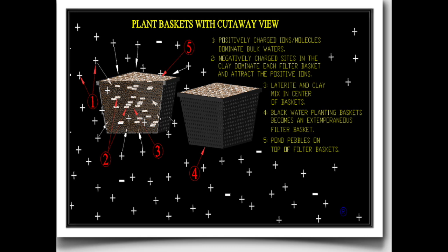Hello everybody, this is Dr. Novak again. This is the second part of me explaining the nitrogen cycle. If you watched part one, you probably learned right away that there are three types of oxygen requirements for bacteria. We're not talking about anaerobic bacteria because they don't require any oxygen — we're talking about the oxygen requirements for bacteria that we use in our aquariums, which is never talked about.